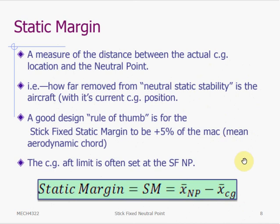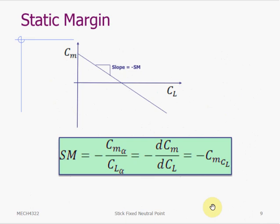We know that for a stable system, the neutral point is aft of the CG. So, a positive static margin implies a stable system. We can also compute static margin from CM versus CL curve. In this case, static margin is defined as the negative of the slope of the CM versus CL curve.